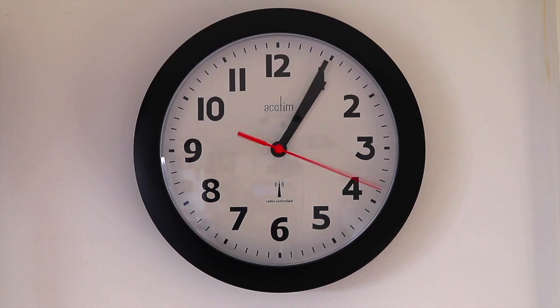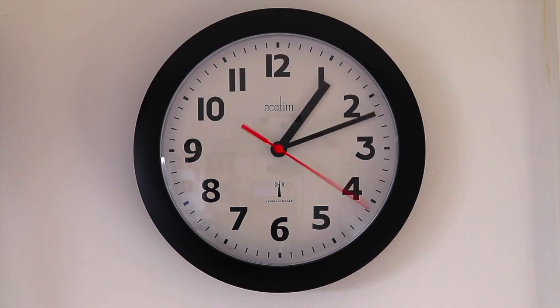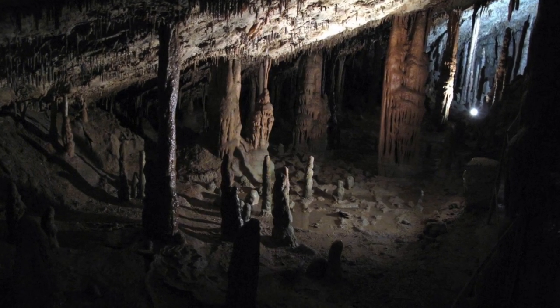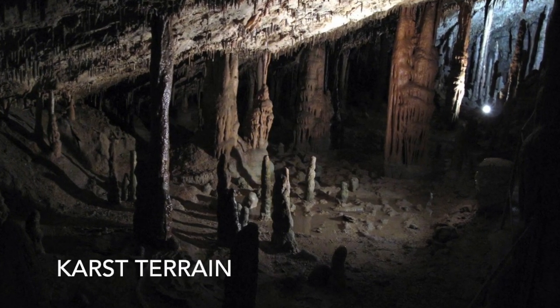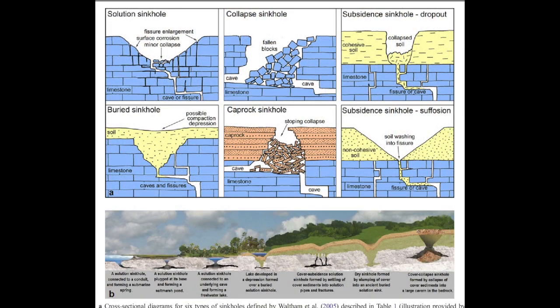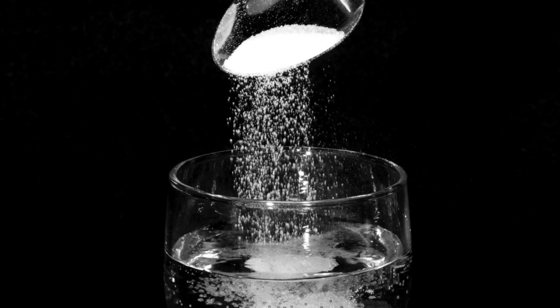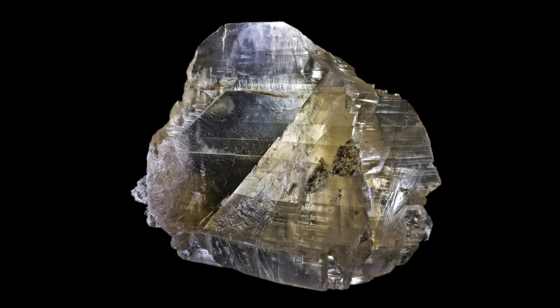Sinkholes may form gradually or suddenly and are found worldwide. Sinkholes are most common in what geologists call karst terrain. These are regions where the types of rock below the land surface can naturally erode or be dissolved by groundwater circulating through them. Soluble rocks include salt beds and domes, gypsum and limestone and other carbonate rock.